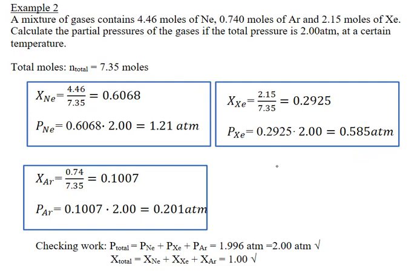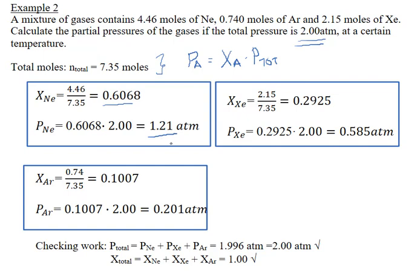Let's look at another example. We have a mixture of gases containing 4.46 moles of neon, 0.740 moles of argon, and 2.15 moles of xenon. We'll calculate the partial pressures given that the total pressure equals 2 atmospheres. The total number of moles is 7.35. The partial pressure of a gas equals its mole fraction times the total pressure. For neon, the mole fraction is 4.46 divided by 7.35, giving 0.6068, so the partial pressure of neon is 1.21 atmospheres.